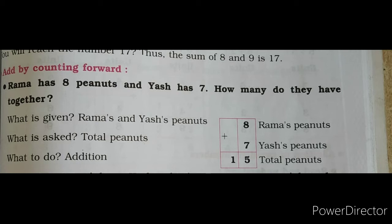So children, 8 plus 7 — you have to count forward after 8. See: 9, 10, 11, 12, 13, 14, and 15. So 15 is the answer. You have to write it. Children, you have to do practice of such examples.